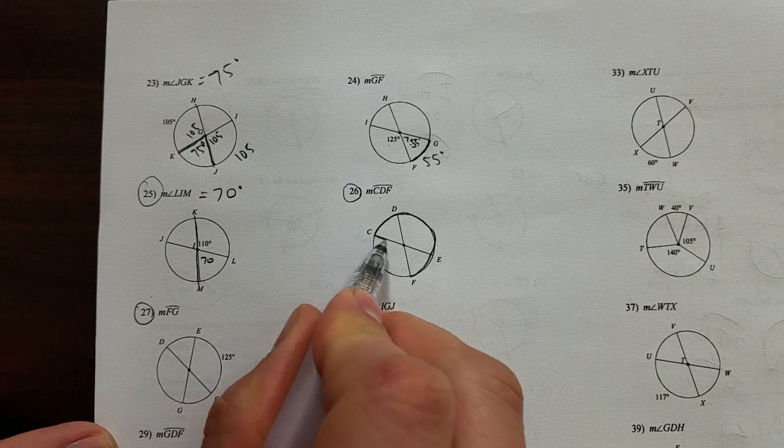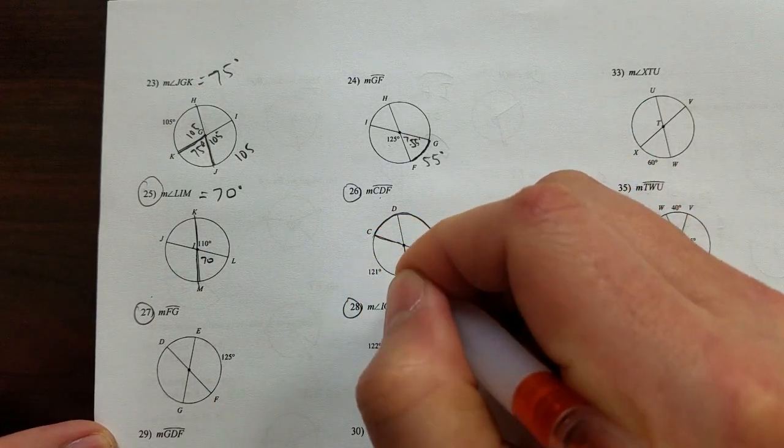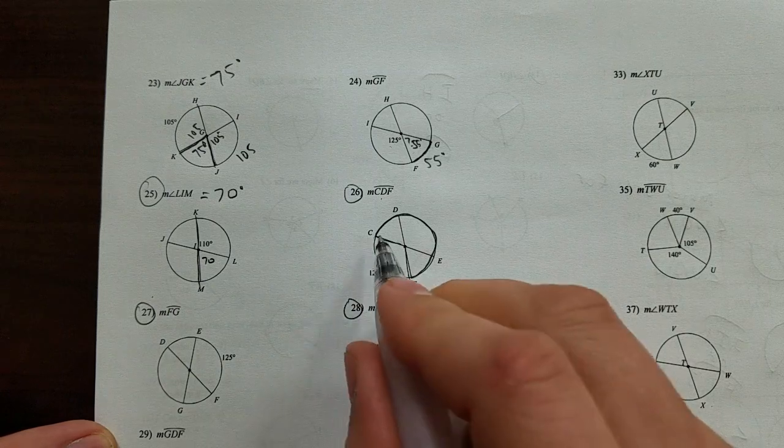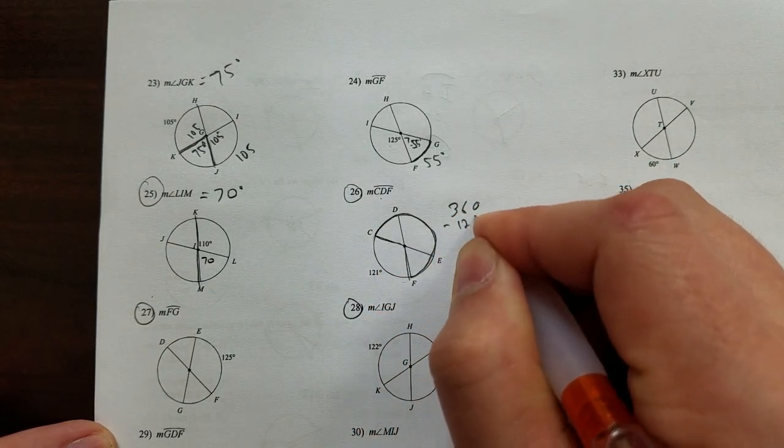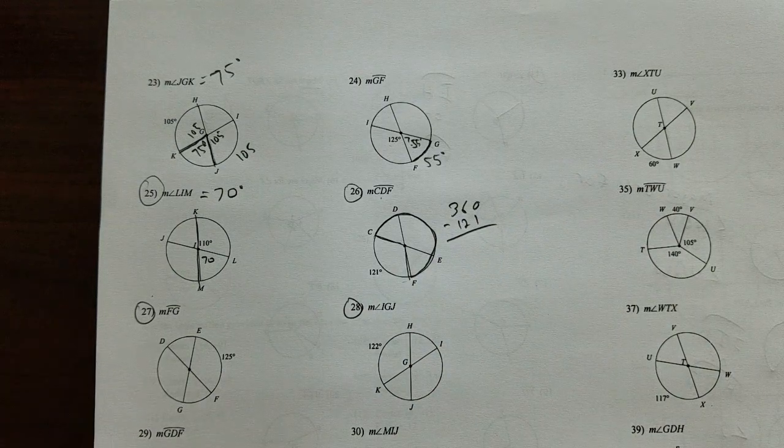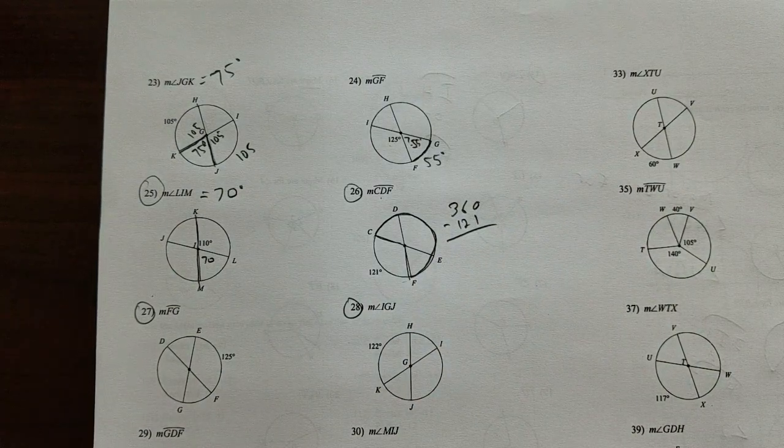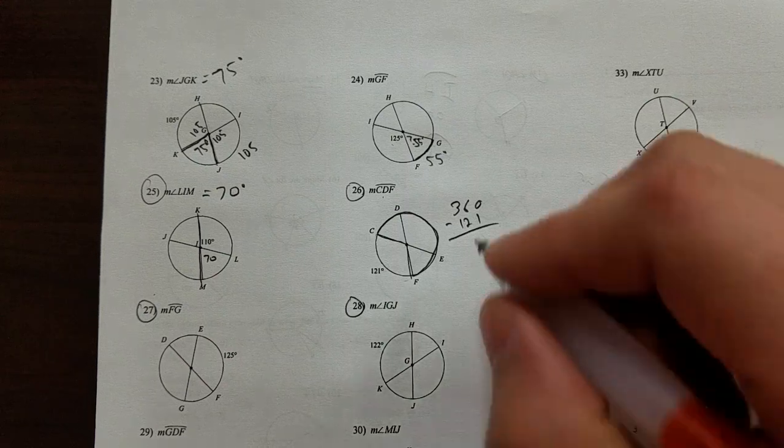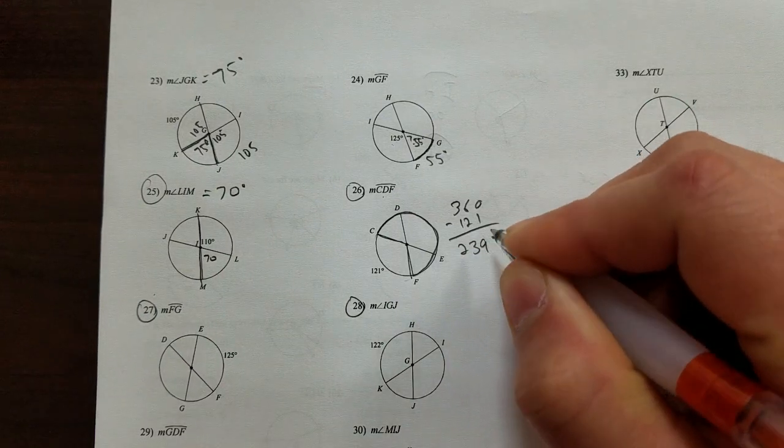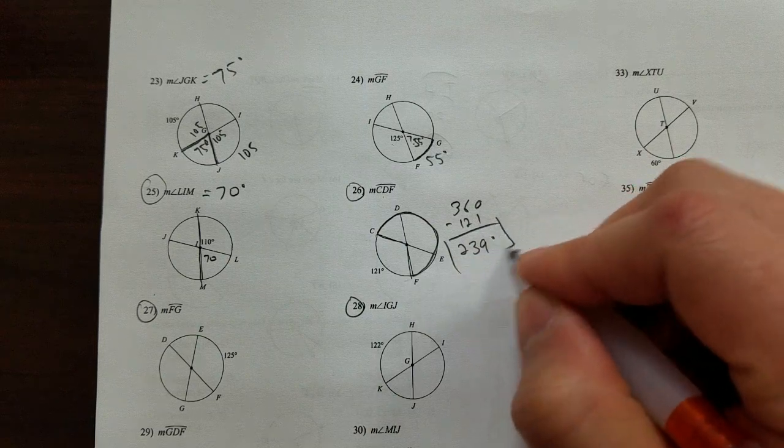If I know that this portion right here is 121, and I want to know the rest of it, I'll just do 360 minus 121. So 360 minus 121, we get 239. So 239 degrees is your answer there.